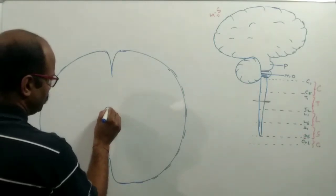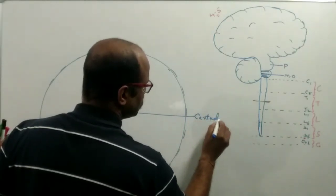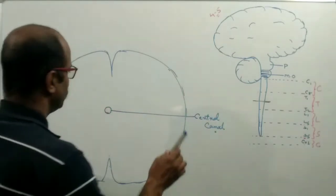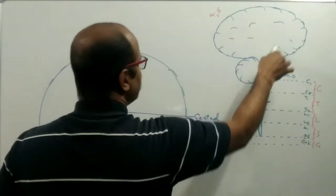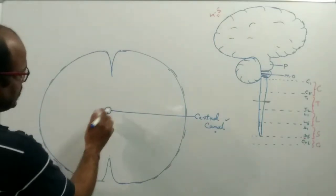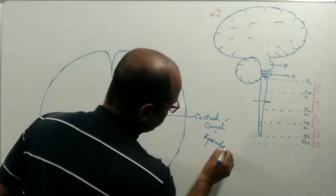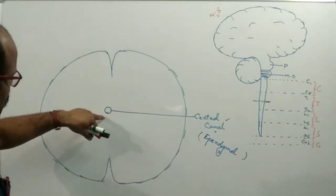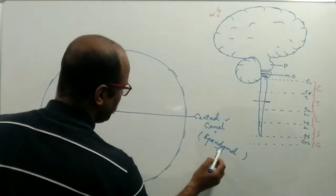In the center of the spinal cord there is a canal known as the central canal. This central canal is filled with cerebrospinal fluid and communicates with the fourth ventricle of the pons as well as the ventricles of the brain. Internally, it is lined by a ciliated epithelium known as the ependymal epithelium.